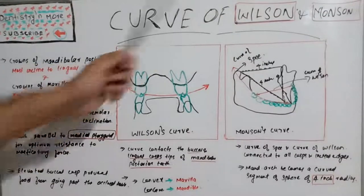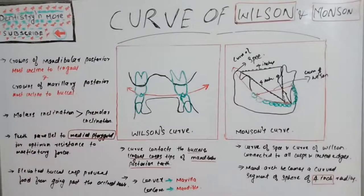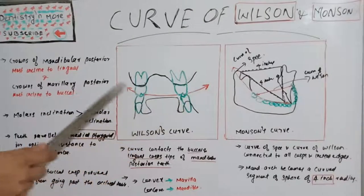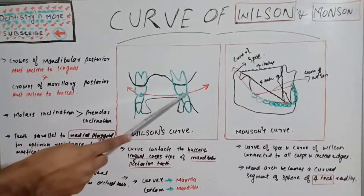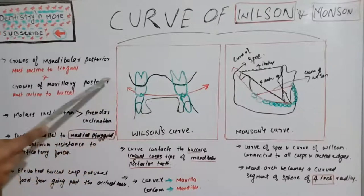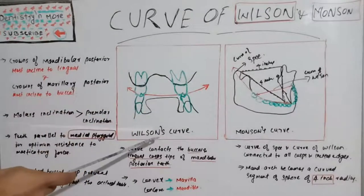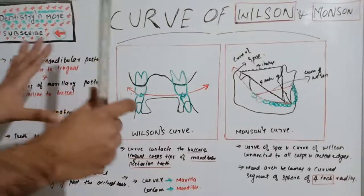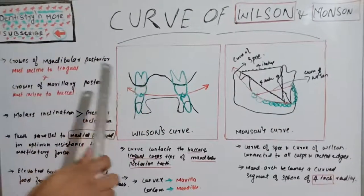Curve of Wilson is the red line which passes through the buccal and lingual cusp of posterior teeth. This is Wilson's curve. This should be looked at from the front side, that is a frontal view.